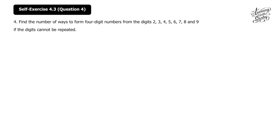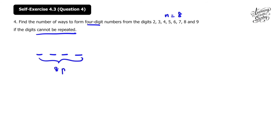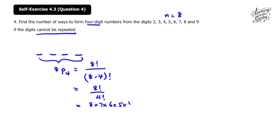Let's look at question 4. Find the number of ways to form 4-digit numbers from the digits 2, 3, 4, 5, 6, 7, 8, and 9 if the digits cannot be repeated. We have 8 digits and we're forming 4-digit numbers, so we have 4 spaces with 8 to choose from. This is 8P4, which equals 8 factorial over (8 minus 4) factorial, equals 8 factorial over 4 factorial, equals 8 times 7 times 6 times 5 times 4 factorial over 4 factorial. We cancel the 4 factorial top and bottom, giving 1,680 ways.